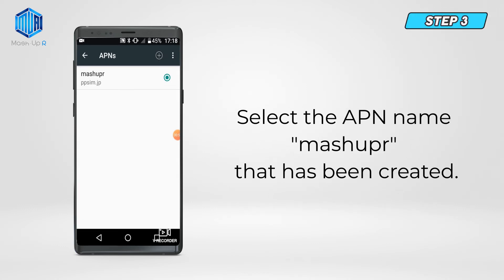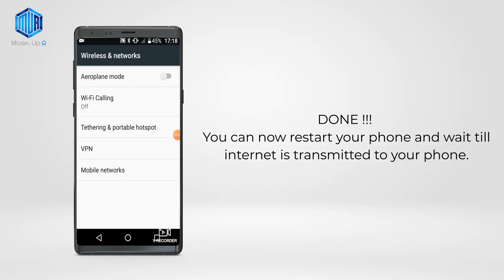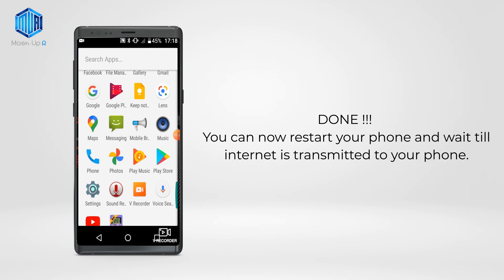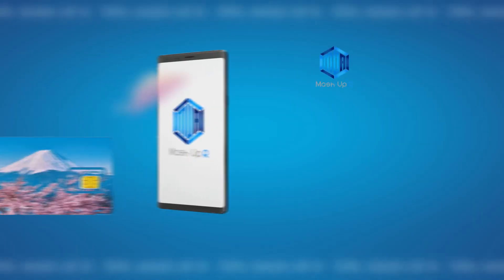Step 3. Select the APN name MashupR that has been created. And done! You can now restart your phone and wait until internet is transmitted to your phone.